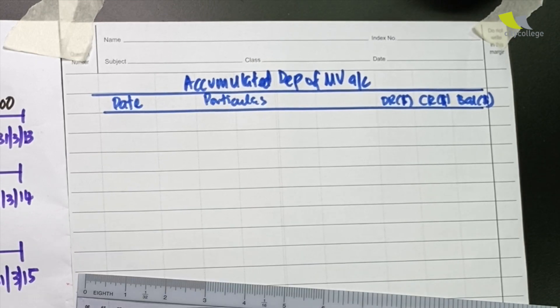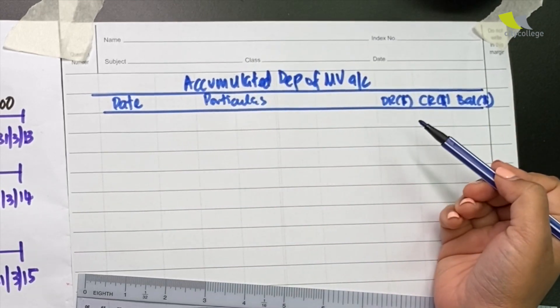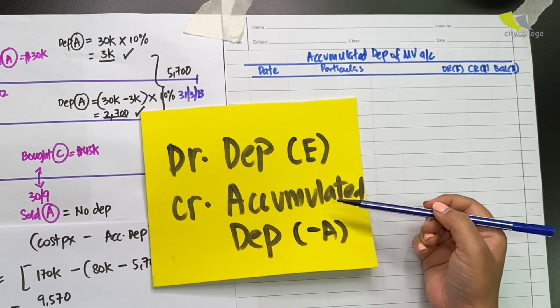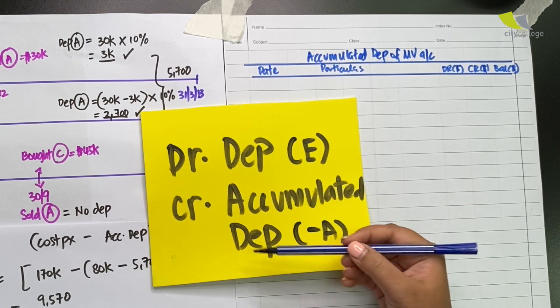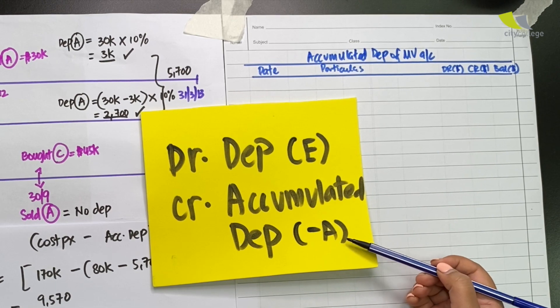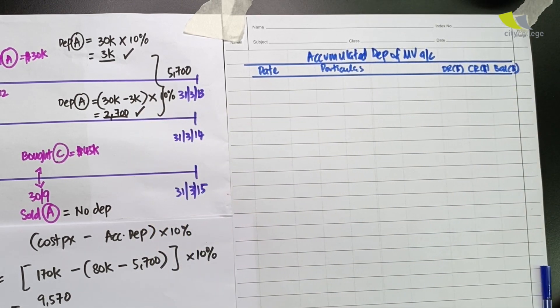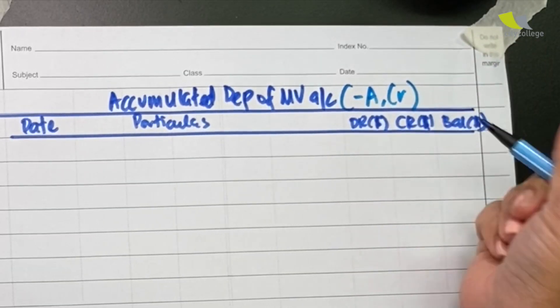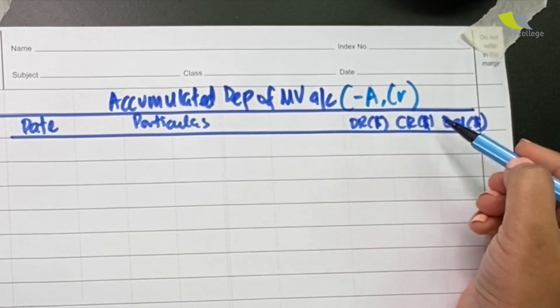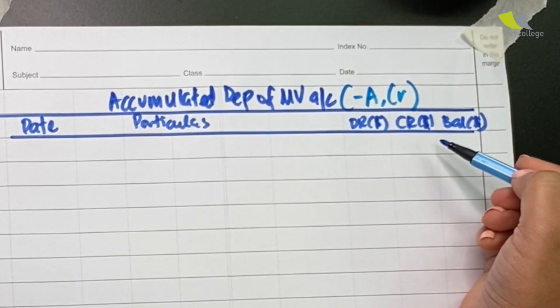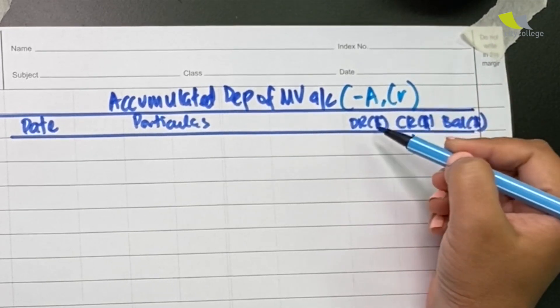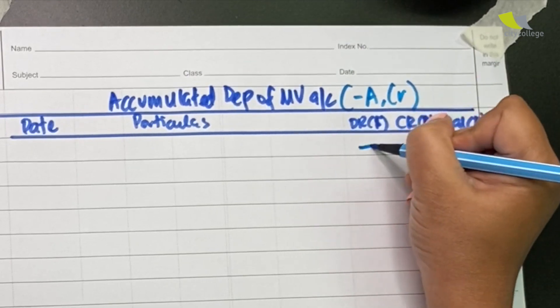Next we have to ask ourselves what is the nature of the account. Let's revisit the double entry. The double entry is to debit depreciation and credit accumulated depreciation. Accumulated depreciation is a negative asset with a credit nature. It's a good habit to write down that it's a negative asset with a credit nature right on top. The column that has the same nature always denotes the increase and the column with the opposite nature denotes the decrease.